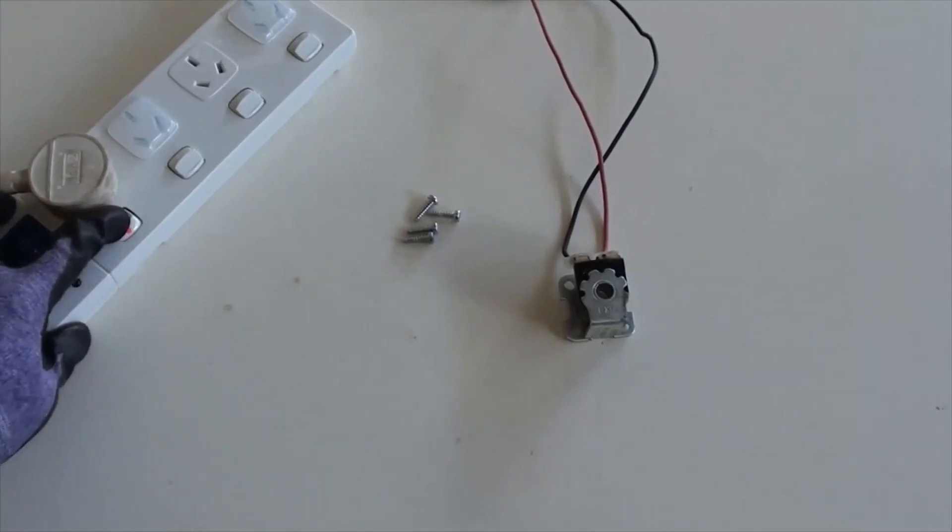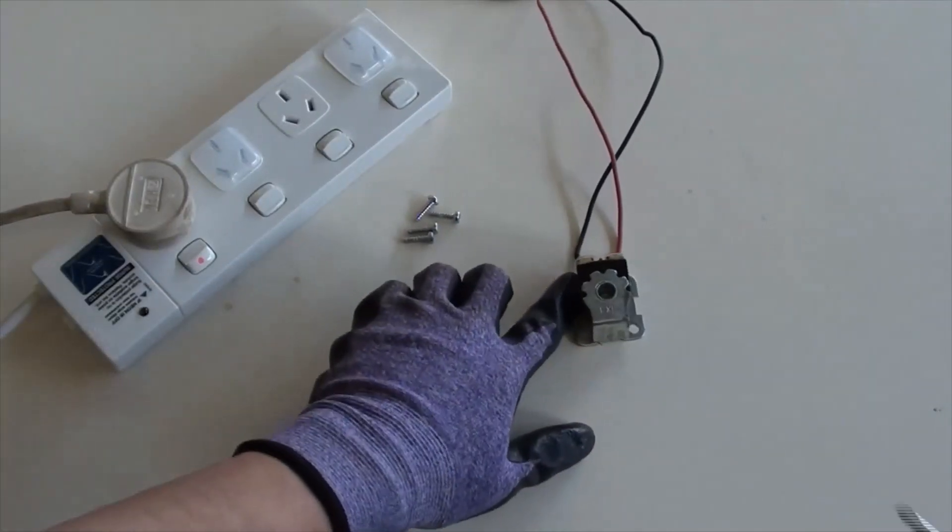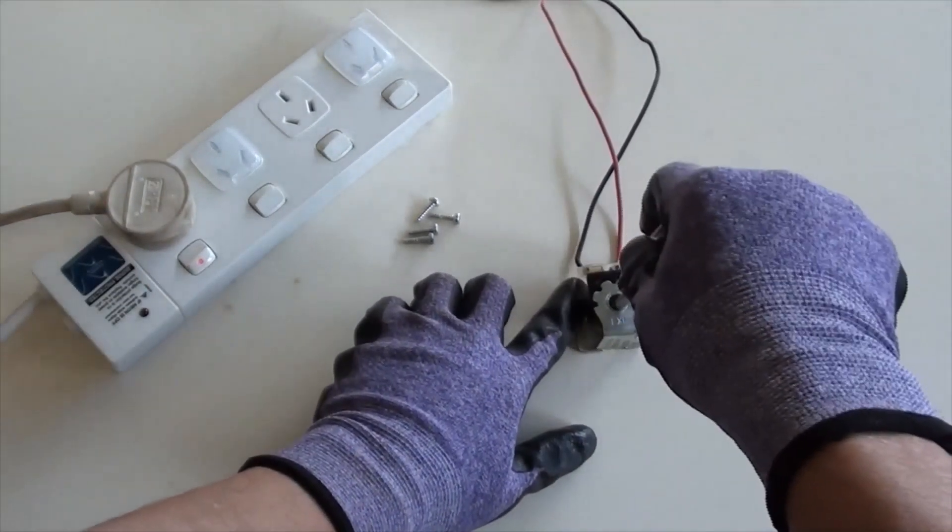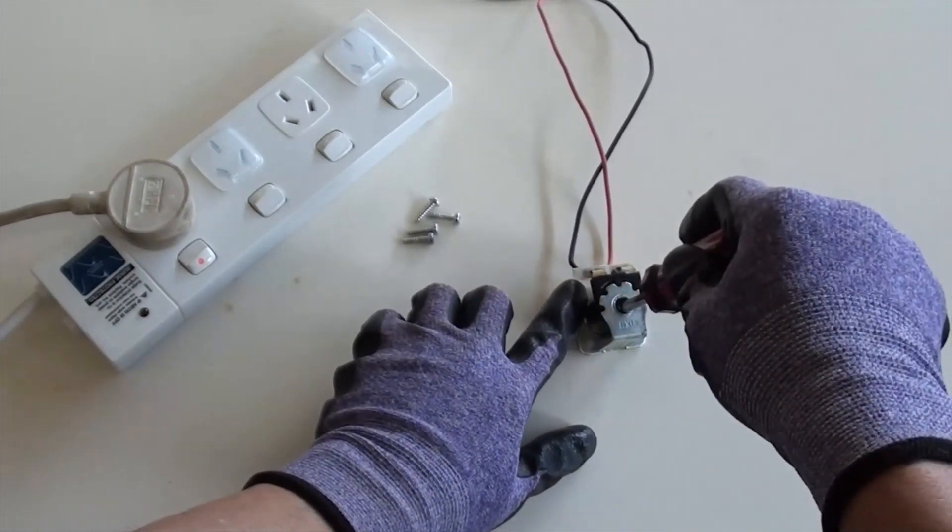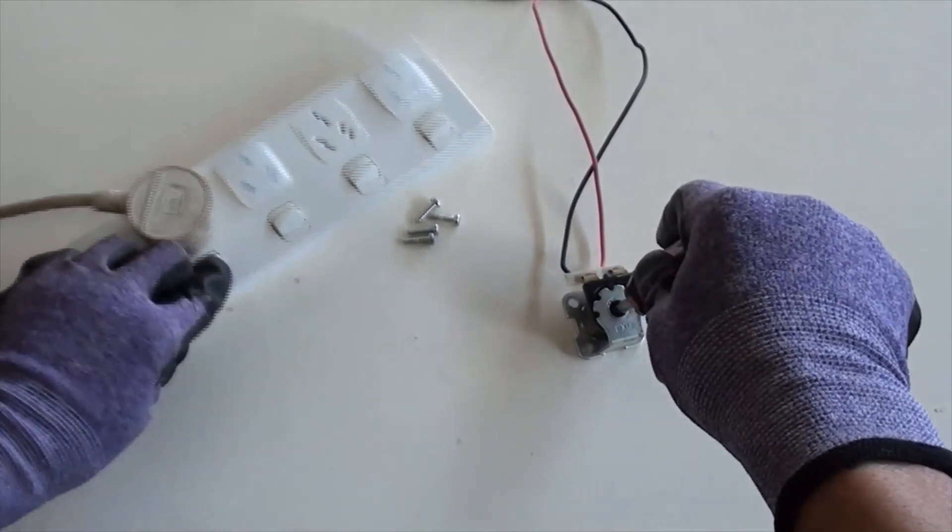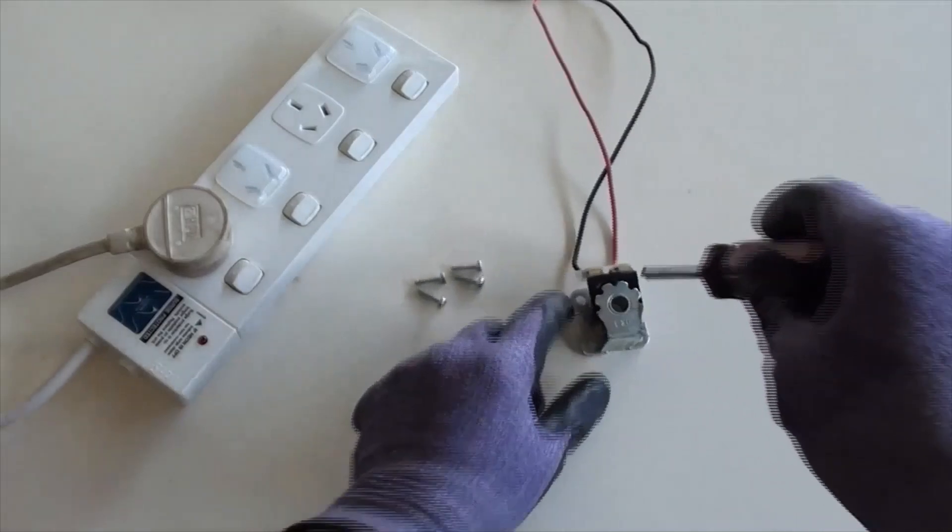Switch the power on. Then put the screwdriver's tip into the center hole of the solenoid and stay there about 10 seconds. Switch the power off, then pull the screwdriver out.